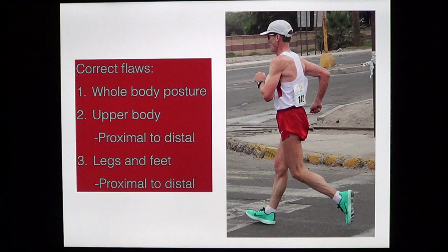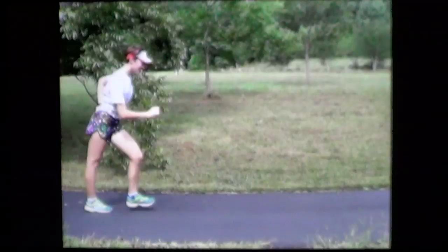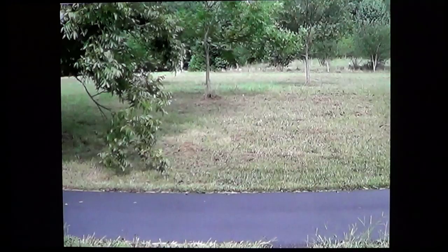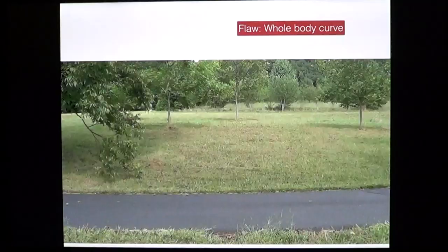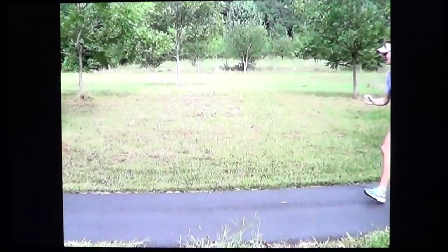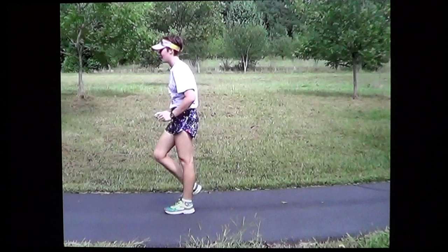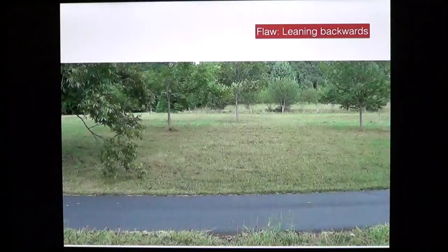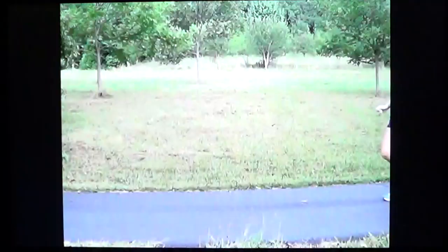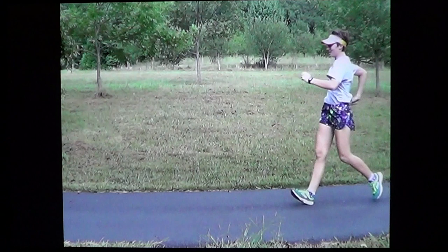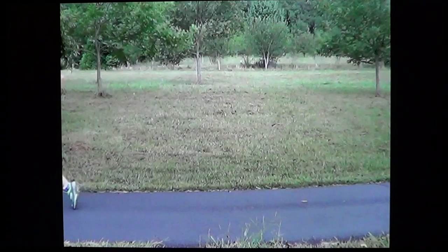A common flaw is leaning at the waist — this is a postural flaw. The athlete has been taught to lean when race walking but unfortunately they've interpreted it as leaning at the waist. This athlete is demonstrating a curved or cup shape for the whole body, with the head and feet forming a curve — you can see that cup or sitting shape. In another example, the athlete is leaning backwards, with their hips and feet in advance of their head all the way through the stride, which is very inefficient.